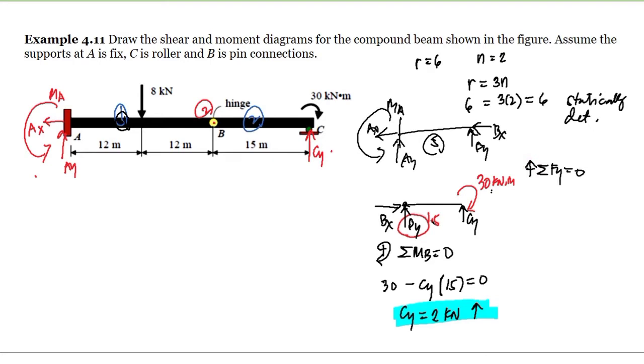For summation of forces vertical equals zero, taking upward as positive, we have BY plus CY which is 2 kilonewton upward. This equals negative 2 kilonewton. Since it's negative, BY is directed downward, not upward.